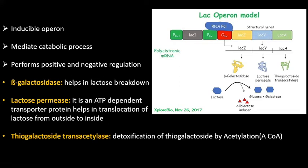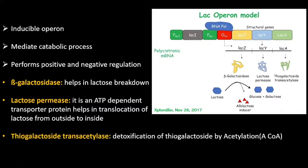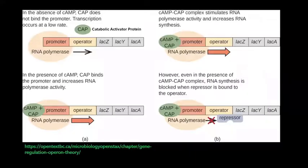Expression of the lac operon is controlled by the regulatory gene LAC-I, which is located immediately adjacent to the promoter region. It encodes an allosteric repressor protein that keeps the operon off by binding to the operator and blocking RNA polymerase from binding to the promoter.